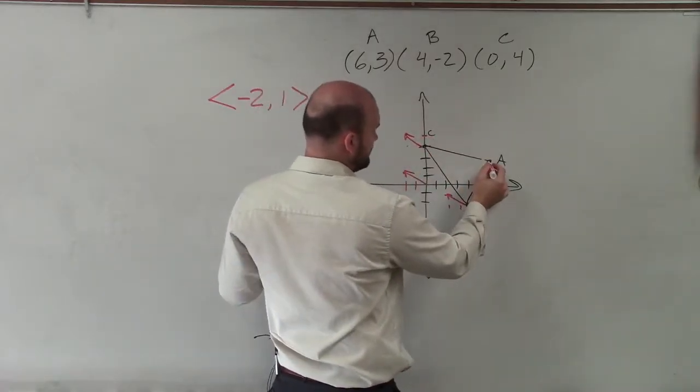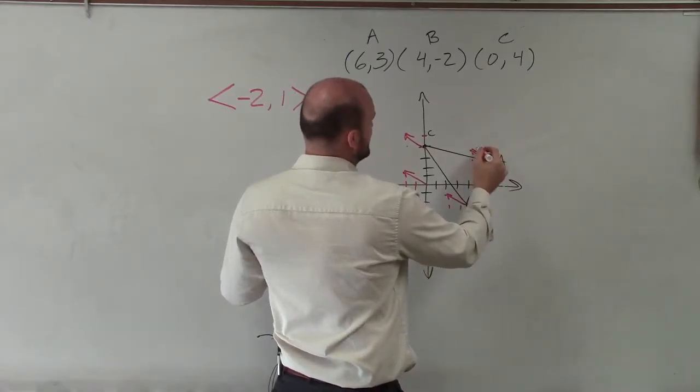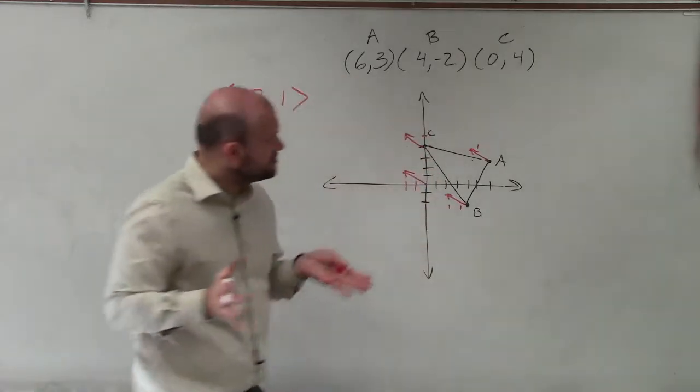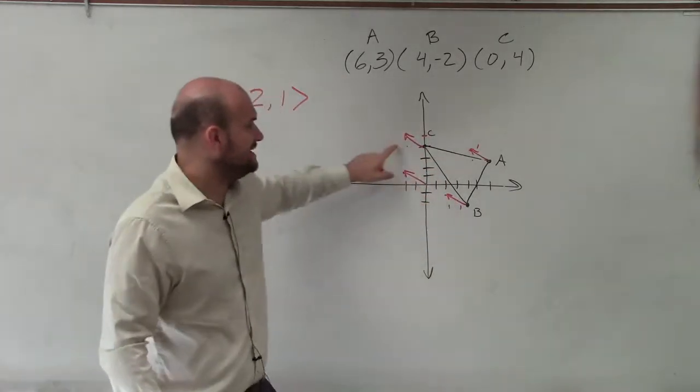And from A, if I go over 2, up 1, that is my new A vector. So all I pretty much am doing is I'm applying what the transformation vector is. And I'm applying that to each and every point.